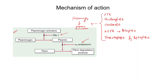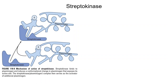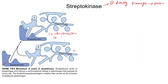Let's start with streptokinase. Unlike the tissue plasminogen activators, it does not directly convert plasminogen to plasmin. Streptokinase binds to plasminogen and forms a one-to-one stoichiometric complex with plasminogen. Once this complex is formed, there will be a conformational change in the plasminogen that exposes its active site.